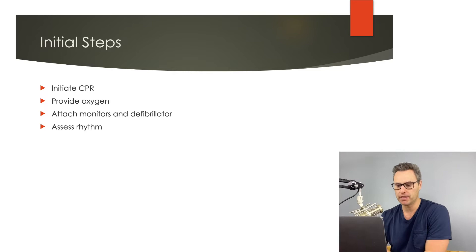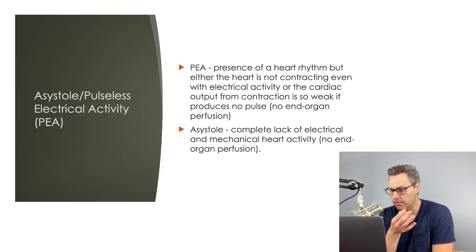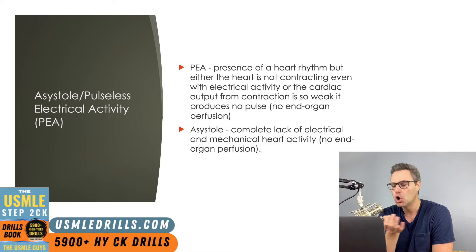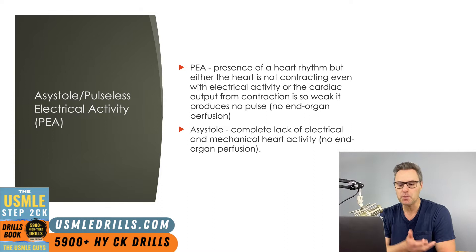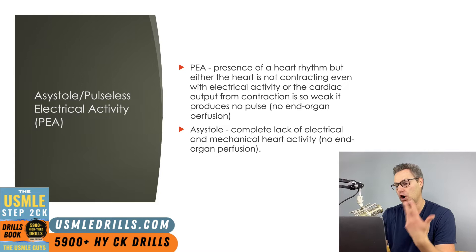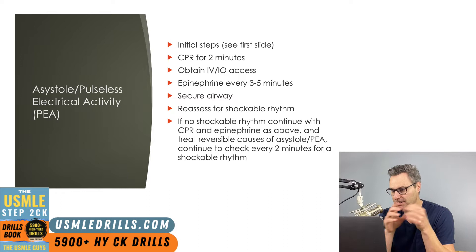There are several different rhythms that you might see in patients with cardiac arrest. We'll first go over the non-shockable rhythms — these are PEA (pulseless electrical activity) or asystole. PEA is defined as a presence of a heart rhythm, but either the heart is not contracting evenly with electrical activity, or the cardiac output from contraction is so weak that it doesn't produce a pulse, meaning there is no end organ perfusion. Asystole is defined as a complete lack of electrical and mechanical heart activity — also no end organ perfusion — otherwise known as a cardiac flatline.